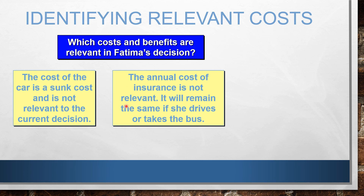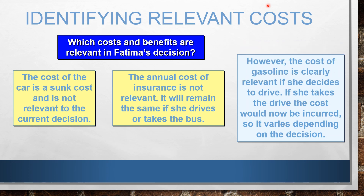Which costs and benefits are relevant in her decision? The cost of the car itself is irrelevant — how much she initially paid is already a sunk cost. The annual cost of insurance is also not relevant because it does not differ between the alternatives — whether she drives or takes the bus, she will still pay the annual auto insurance. What is relevant is the cost of gasoline, because she would not spend on that if she takes the bus.